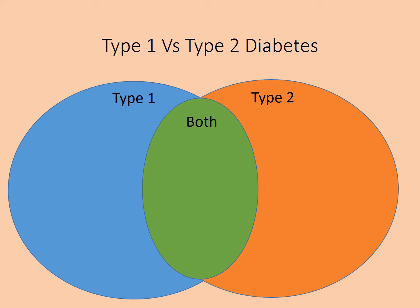Now a Venn diagram task. In the blue circle, write features that only apply to type 1 diabetes. In the orange circle, write features that only apply to type 2. In the green overlapping oval, write shared characteristics. This is a really important section — it could form the basis of a long-answer question. Pause the video and have a go.